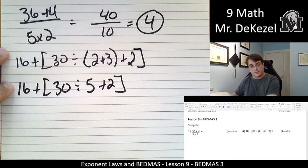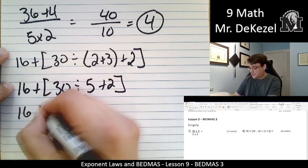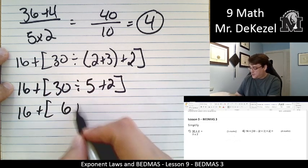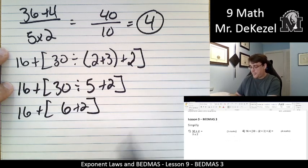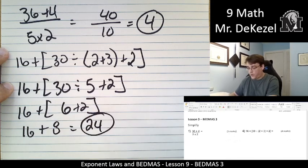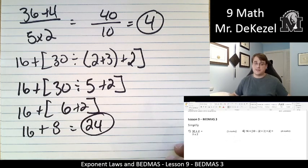Now I'm going to do what's in the brackets, and I'm going to do multiplication and addition. Second, so we have 16 plus 30 divided by 5 is 6 plus 2. We do what's in the brackets, we add, so 16 plus 8.